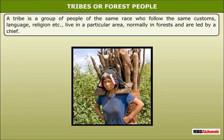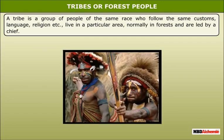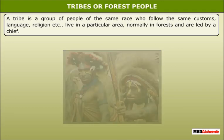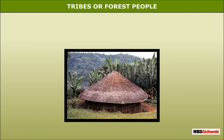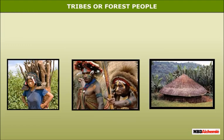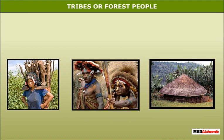Tribes or Forest People: A tribe is a group of people of the same race who follow the same customs, language, religion, etc. They live in a particular area, normally in forests, and are led by a chief. Tribes live in cloistered, exclusive, remote and inhospitable areas such as hills and forests. Their livelihood depends on primitive agriculture and hunting.